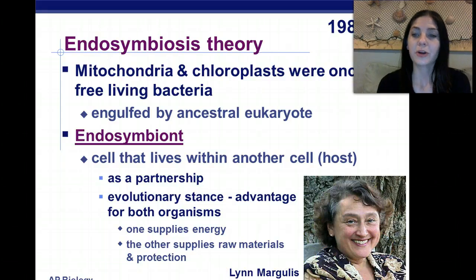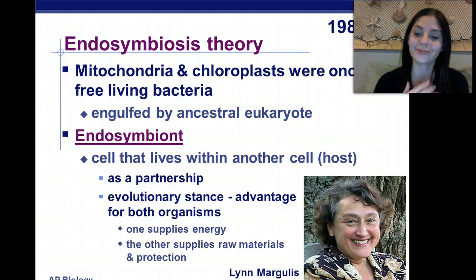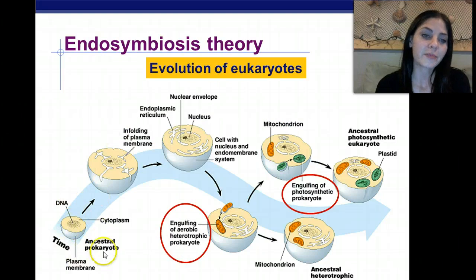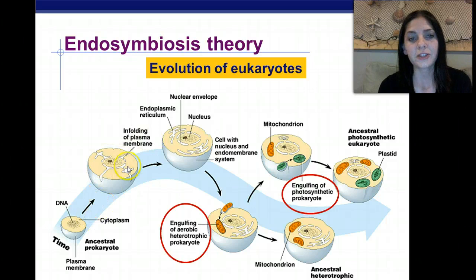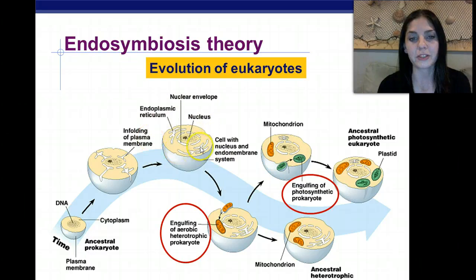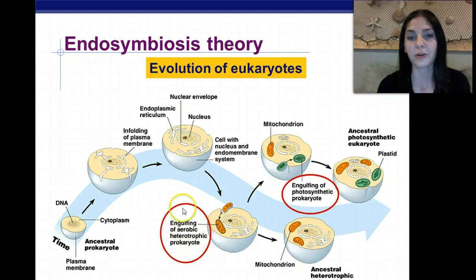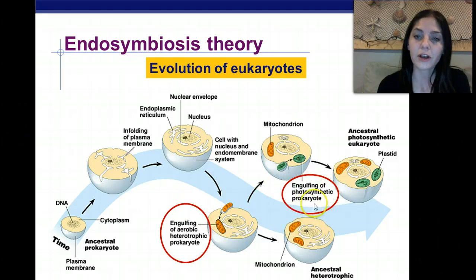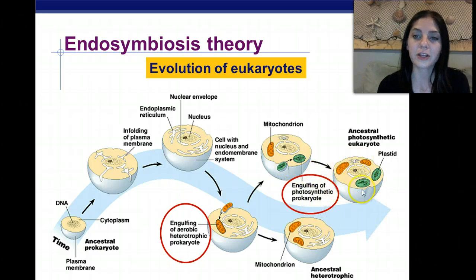The scientist Lynn Margulis first came up with the endosymbiosis theory in 1981. Looking at this picture, we start with an ancestral prokaryotic cell that eventually enfolded into a eukaryotic cell. Once the eukaryotic cell formed with its endomembrane system, it engulfed mitochondria and chloroplasts — first an aerobic heterotrophic prokaryote, which became the mitochondria, and then a photosynthetic prokaryotic cell, which became the chloroplast — eventually resulting in an ancestral photosynthetic eukaryotic cell with both organelles.